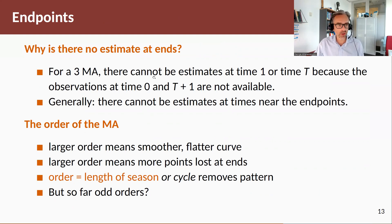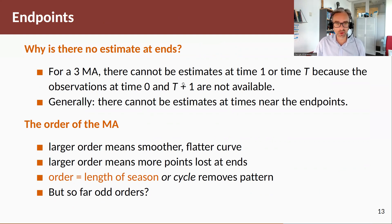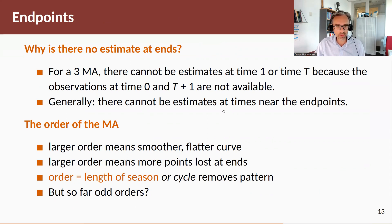For example, for a three-component moving average, we cannot have any estimates at time 1 or at time T because we don't have an observation at time 0 or we don't have an observation at time T plus 1. So generally, there cannot be estimates at times near the endpoints.